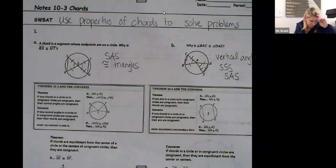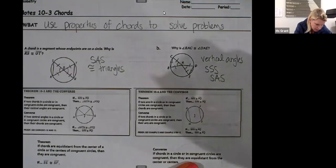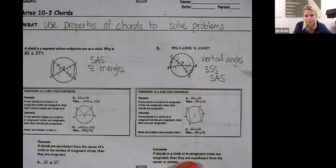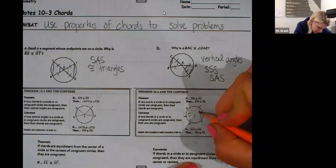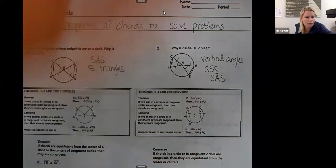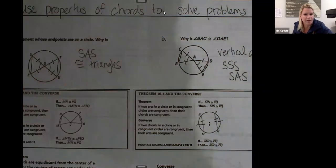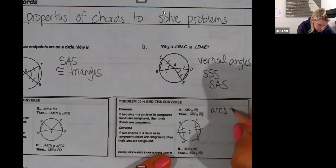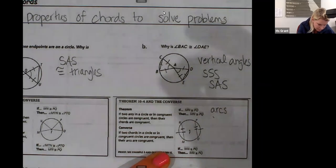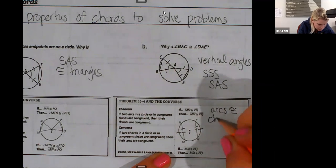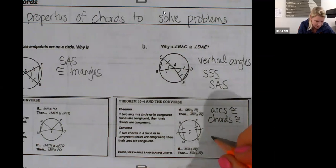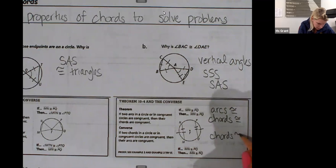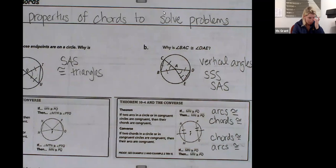So theorem 10.4. If two arcs in a circle are congruent, here's an arc. If this arc is congruent to this arc, then their chords are congruent. Then N, M chord and P, Q chord are congruent. This is good. Let me focus a little bit. The converse means if I know the chords are congruent, then the arcs are congruent. So this is going to be if arcs are congruent, then the chords are congruent. If the converse says, if the chords are congruent, then the arcs are congruent.